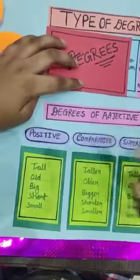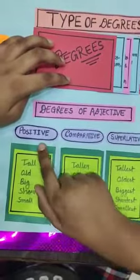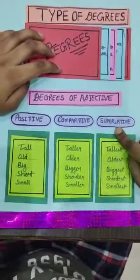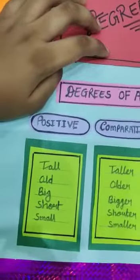Degrees of adjective. Positive degree, comparative degree, superlative degree. Let's see some examples.